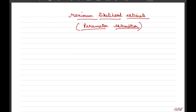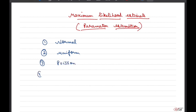In our discussion so far, we have learned there are many different distributions. For example, we mentioned normal distribution, uniform distribution, Poisson process, binomial distribution, and so on, when we were dealing with random variables.